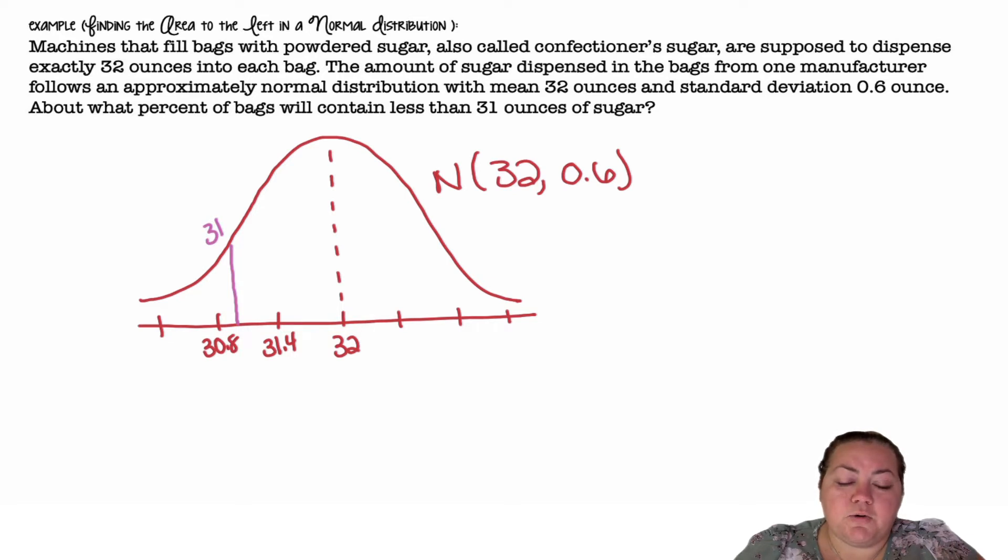I wanted to go to 31. Well, I know 31 is going to be below, so I went two standard deviations below so that I could get an idea of where 31 would be. And then they wanted less than 31 ounces, so I'm shading below it everything to the left.